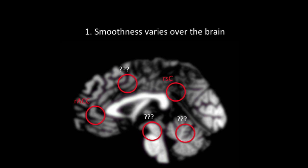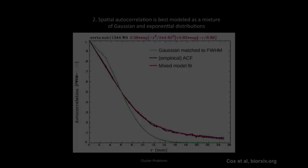These areas have intrinsically higher smoothness than other areas and will show higher false positive rates. Second, the correlation between a voxel and its neighbors does not follow a normal distribution or Gaussian shape, as shown in green. In fact, it follows a mixed distribution between a Gaussian and an exponential distribution shown in red, which seems to model much more accurately the actual correlation between a voxel and its neighbors shown by the black line.